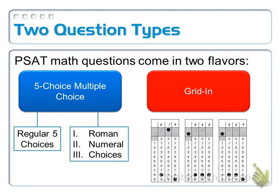On the five-choice multiple-choice kind of questions, they really come in two kinds. Good old-fashioned five choices where it's just A, B, C, D, and E.